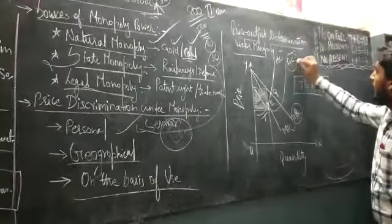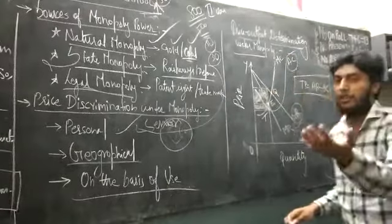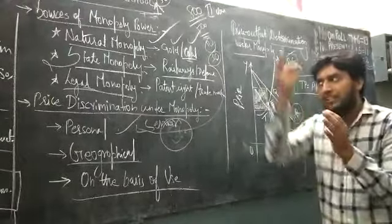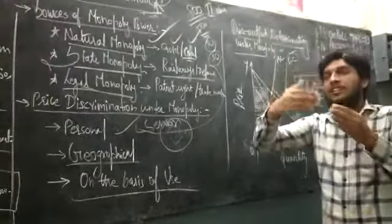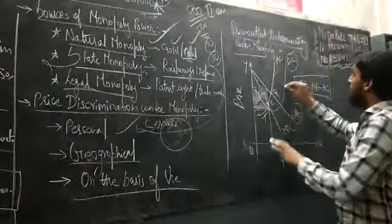Average cost is in U shape. Same, marginal cost is in U shape, above the average cost. Marginal cost is also in U shape, and it is above the average cost.